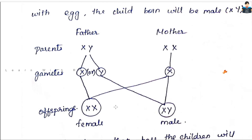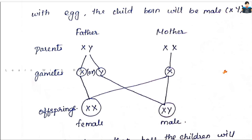We represent father and mother together. Father has X and Y chromosomes; mother has XX chromosomes. The father's gamete formation produces either X or Y. If the X gamete from the father fertilizes, we form a female baby. If the Y gamete from the father fertilizes, we form a male baby.